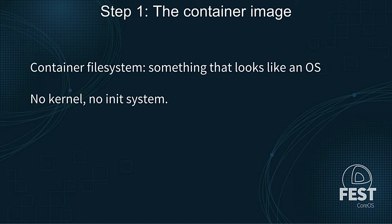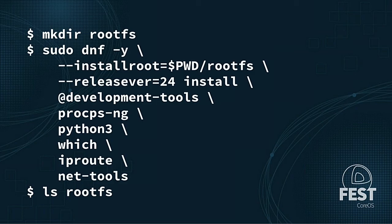What happens when you say 'FROM Ubuntu'? It's something that kind of looks like an operating system. You're clearly not downloading a kernel, there's no init system - and you should not be running an init system in your container. So today we're going to build something that looks like an operating system using a very advanced tool called DNF. DNF is the package manager for Fedora, the replacement for yum. You can think of it like apt-get. All we're going to do is make a root file system where our demo will live.